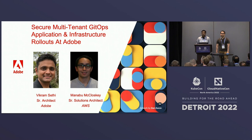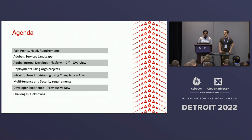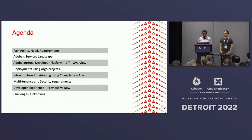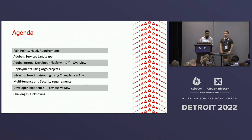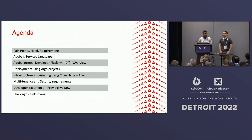Today we're going to talk about how Adobe enabled GitOps-based infrastructure provisioning and application rollouts in a secure and multi-tenant way. We have a packed agenda: we'll start with pain points, needs, and requirements; then a 10,000-feet overview of Adobe's services landscape and a quick overview of the internal developer platform; then dive into deployments using Argo projects and infrastructure provisioning using Crossplane and Argo. Manabu will walk through multi-tenancy and security requirements, and finally we'll compare the previous and new developer experience and discuss challenges.